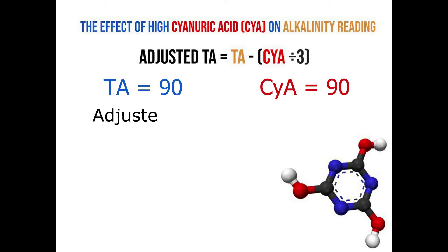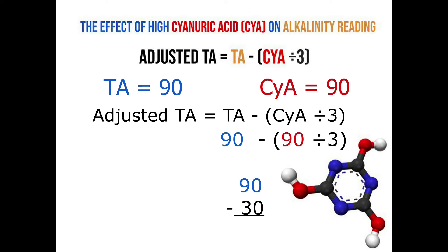So our adjusted total alkalinity will equal our total alkalinity minus our CYA or cyanuric acid divided by three. So if we put that in, we'll take our total alkalinity of 90 minus our CYA or cyanuric acid of 90 divided by three. You do what's in the parentheses first. It'll be 90 minus 30. 90 minus 30 will give us 60. And that's our adjusted total alkalinity.